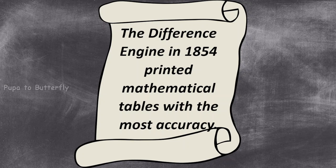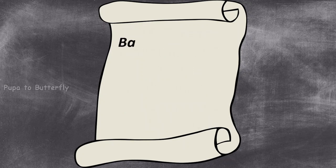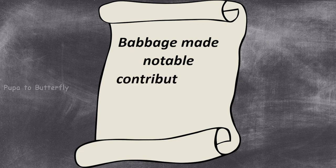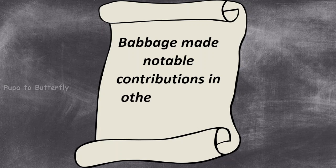The Difference Engine in 1854 printed mathematical tables with the most accuracy. Babbage made notable contributions in other areas as well.